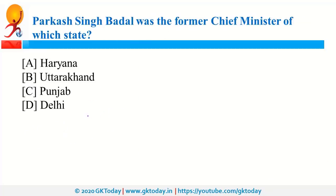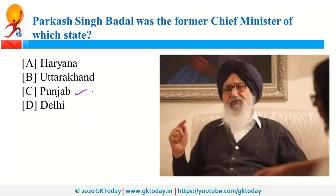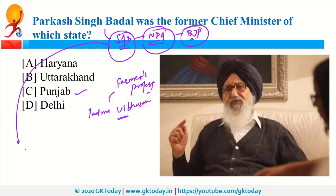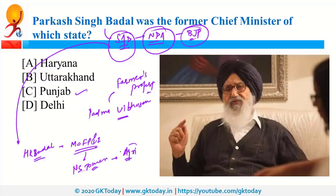Prakash Singh Badal is the former Chief Minister of Punjab. He was in news recently because he returned his Padma Vibhushan Award in support of the Farmers' Protest. He is the leader of SAD — Shiromani Akali Dal. Recently, this party left NDA — National Democratic Alliance, the alliance of political parties where the major party is BJP. At that point, Harsimrat Kaur Badal from SAD also resigned; she was the Minister of Food Processing and Industries. Later, that portfolio was given to Narendra Singh Tomar, who is also the present Agriculture Minister. His constituency is Morena, in Madhya Pradesh. Recently, Madhya Pradesh decided to set up a cow cabinet.